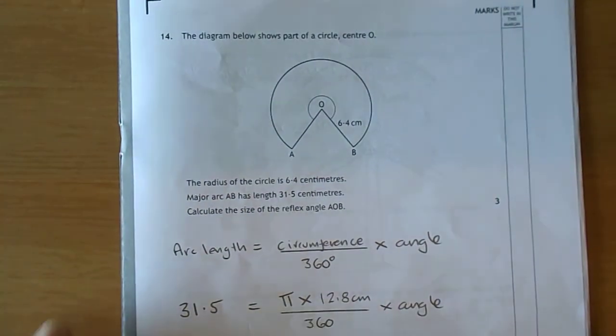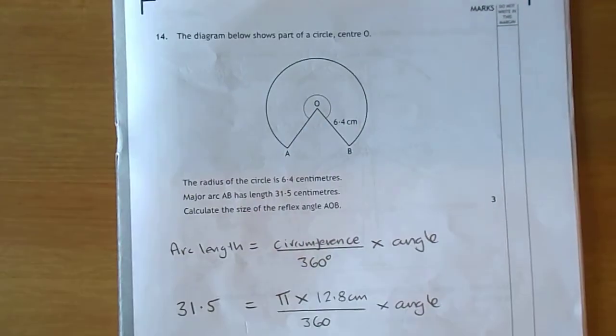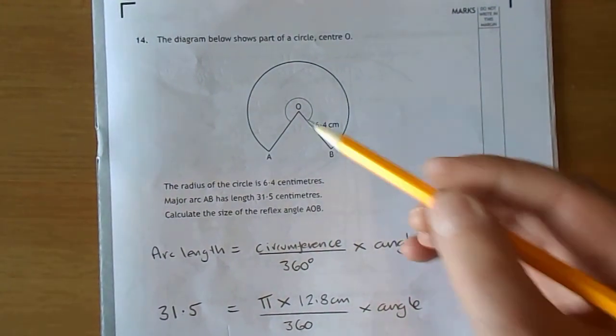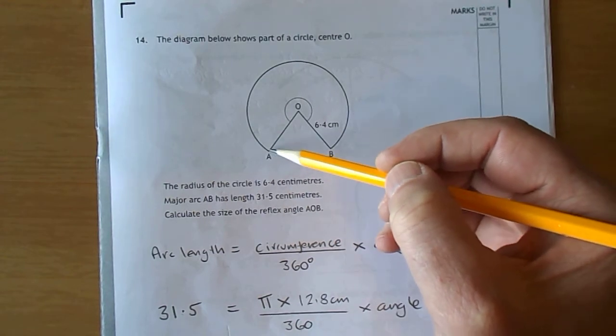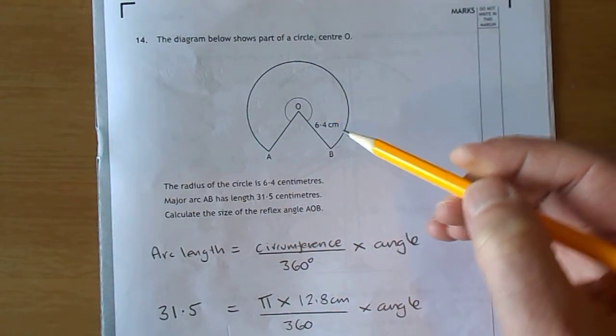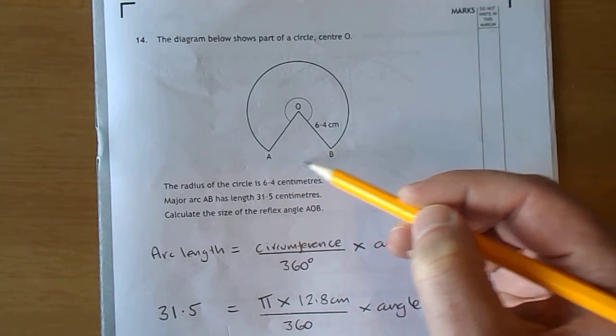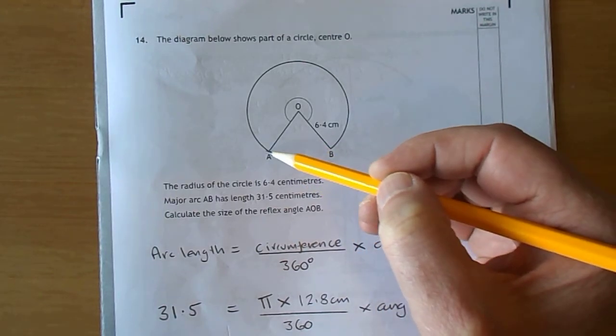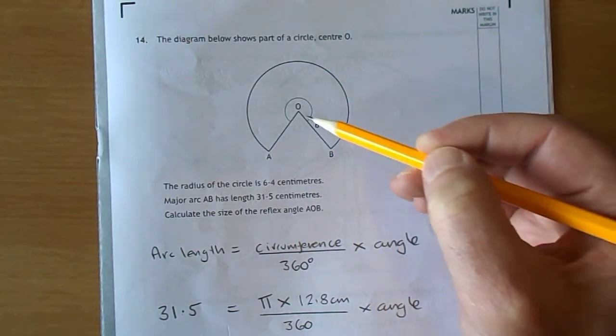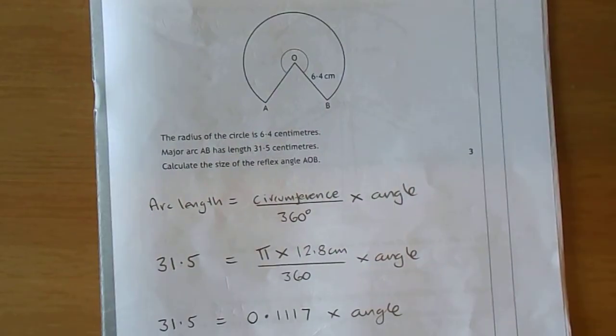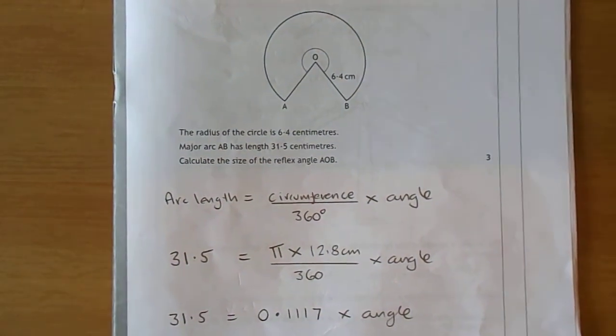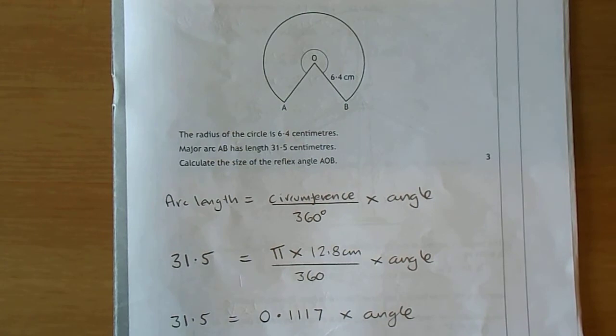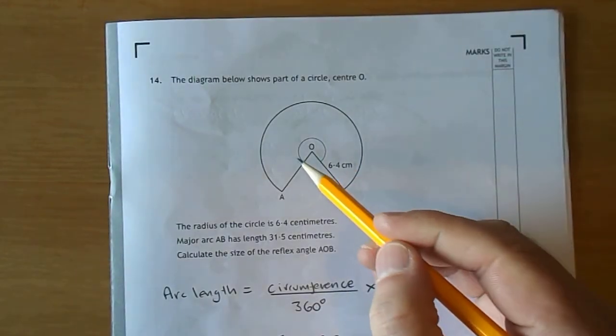Let's turn to question 14. You're given part of a circle and the length of the major arc. That's the bigger of the two possible arcs - if that one's drawn in, that would be the minor arc. You're told that's 31.5, and you're told the radius. They want to get the size of that angle there.